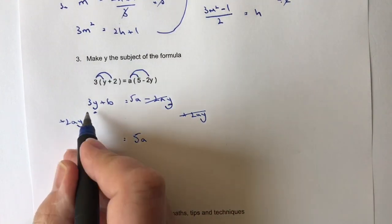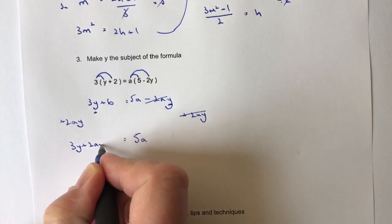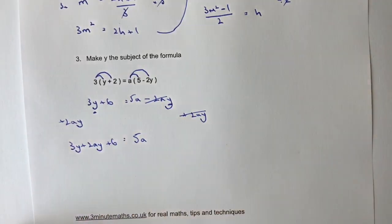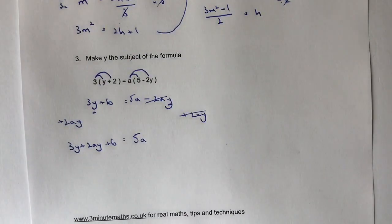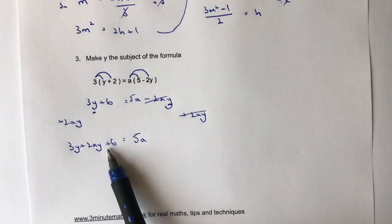On the left-hand side, I get 3Y plus 2AY plus 6 equals 5A. So we're getting a little bit closer because what I want to try to do is to get the terms that contain Y at least on their own to start off with. So I'm going to get rid of this plus 6.